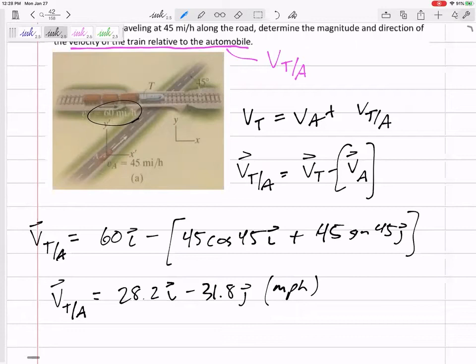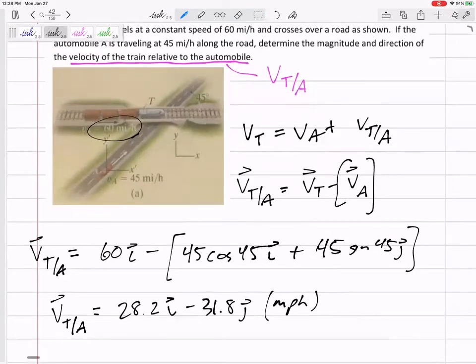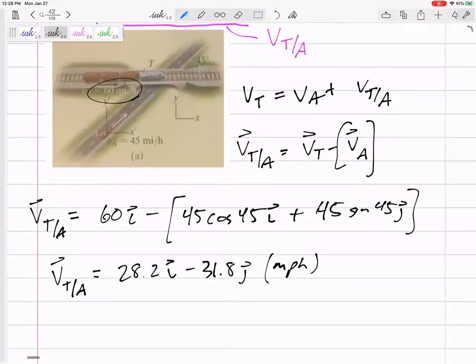Now, normally, nine times out of ten, that's what the question is asking for, and I would box that in. Do you see that this one doesn't ask just for the velocity? It kind of specifies magnitude and direction. So that's perfectly fine. If you know the I and the J, what's the magnitude? A squared plus B squared, take the square root of 28.2 and 31.8.